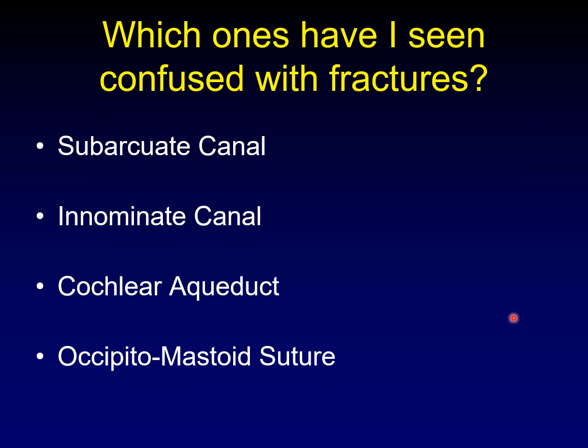So I've gone through a big, long list of potential anatomic structures that can be confused with fractures. Which ones have I actually seen confused with fractures and read out incorrectly? The subarcuate canal is my favorite for a reason — that's frequently mistaken. The innominate canal or singular canal is in a position that is very confusing if you don't know what to look for. The cochlear aqueduct, also in a very confusing position. And the occipitomastoid suture — it's a common location for fractures, so everyone's looking in that location. These are the ones you should be most careful of not to call a fracture when you're evaluating a patient who's undergone trauma.